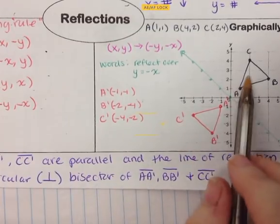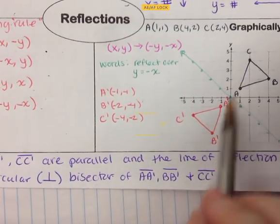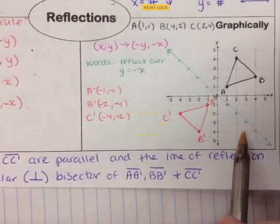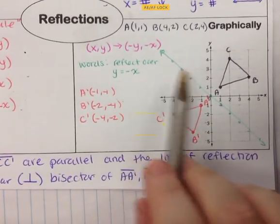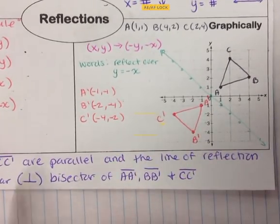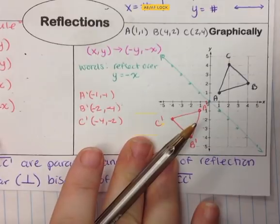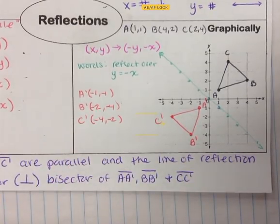So the line of reflection is in fact the perpendicular bisector, proving the property and confirming this is a true reflection. If given two images, you can determine whether a reflection occurred — because if the point had been moved too far or not enough, it would not have been a true reflection.